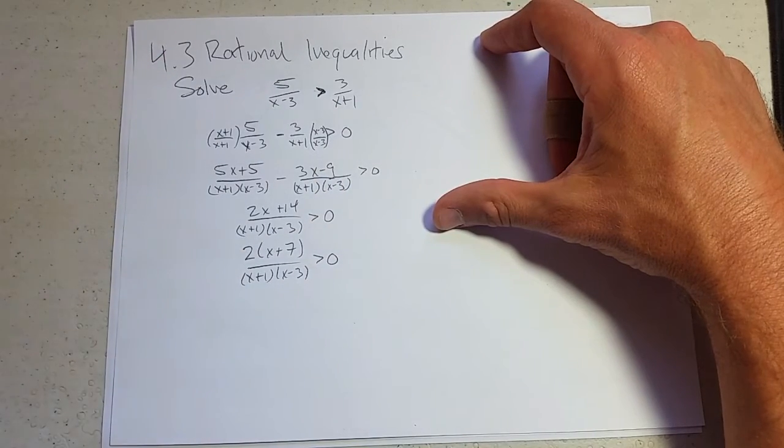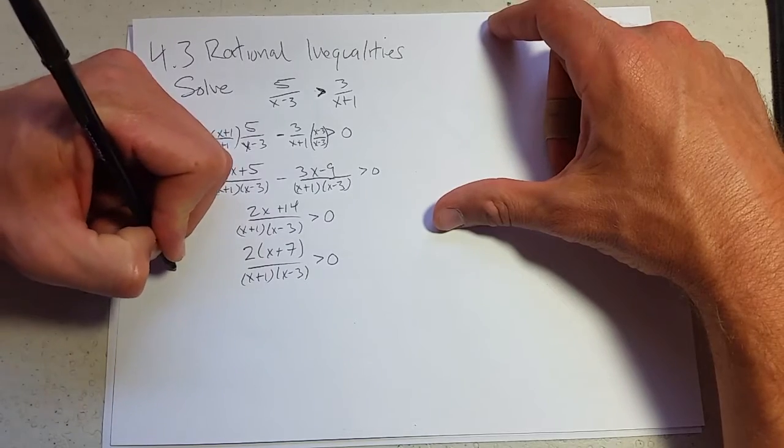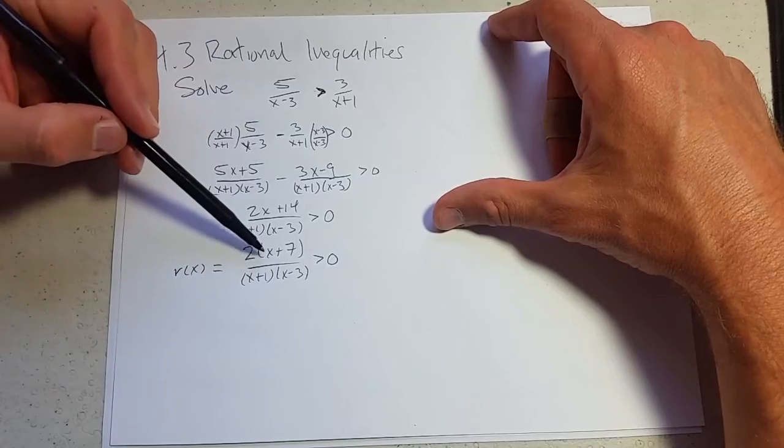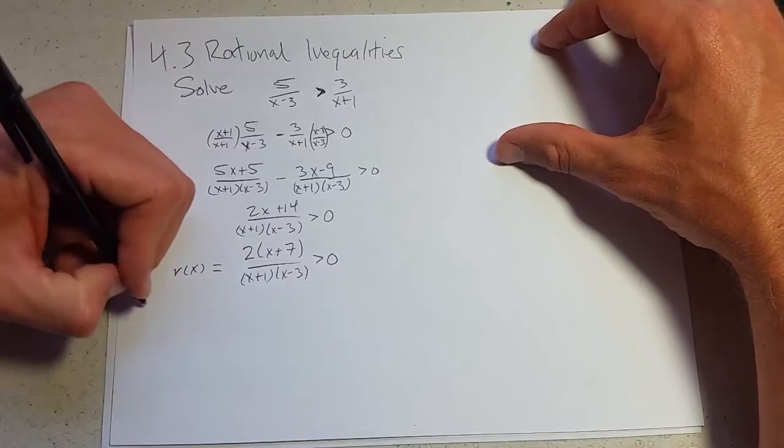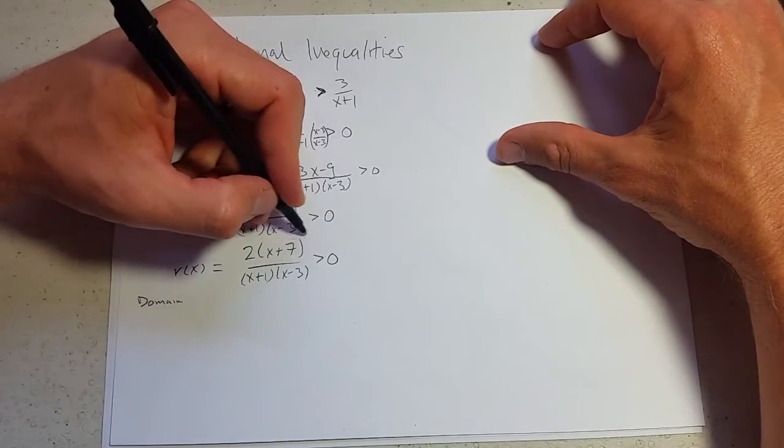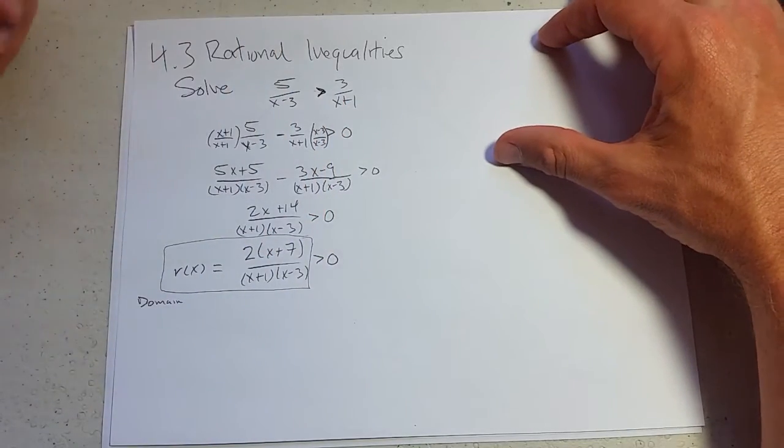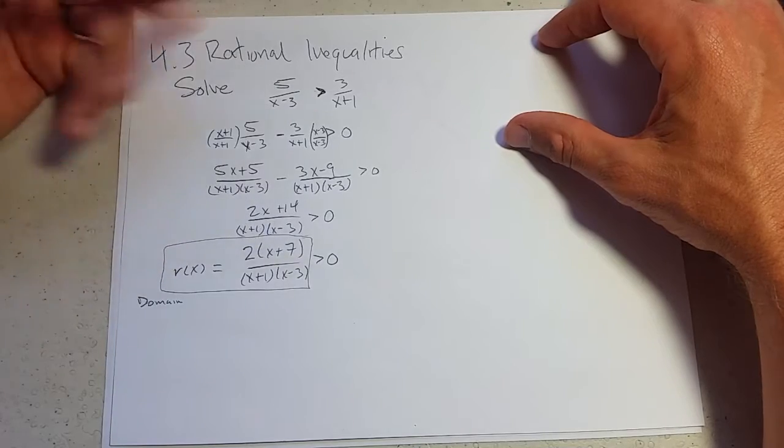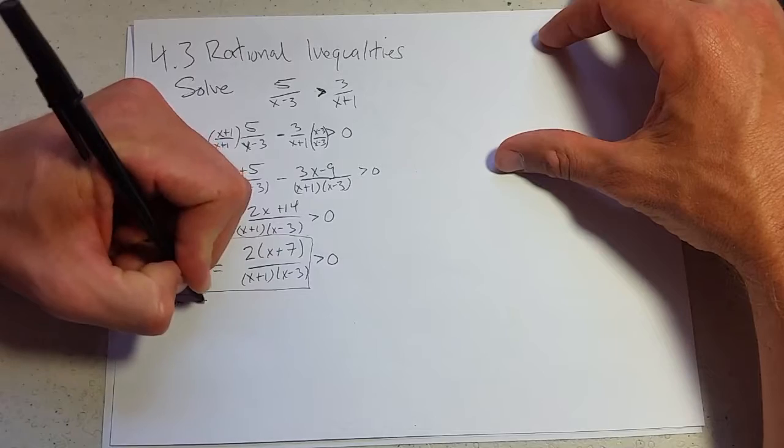And we can factor 2 out. So just like with polynomials, I'm going to give this function a name. And we'll call it r of x. So now we have some x-intercept and some vertical asymptotes to worry about. And let's write down, we'll go domain. So we're really graphing this r of x function now. And the final answer will be when is this rational function greater than 0? So domain, don't use negative 1, don't use positive 3.